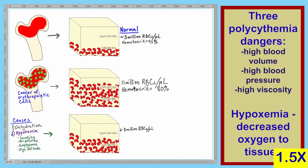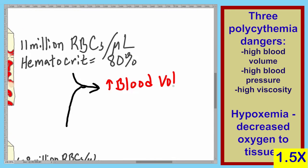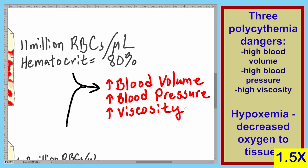There are three primary dangers associated with polycythemia, whether the first form or the second form: increased blood volume, increased blood pressure, and increased viscosity. With the blood being more viscous, the heart has to exert more force to move the blood.